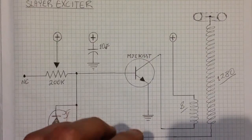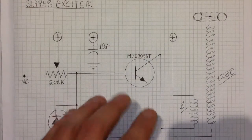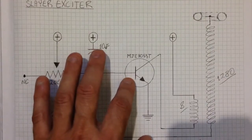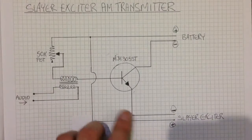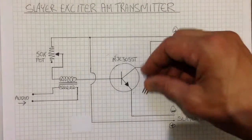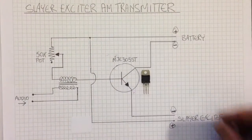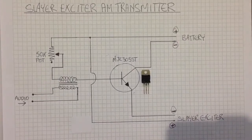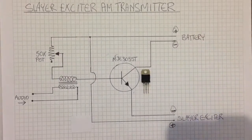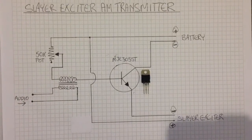But to modulate power to this whole unit we need another transistor of equal power to this one. So we have that here, MJ3055T. This is an extra circuit, so the Slayer Exciter power will connect here, battery will connect here, and audio will connect here.